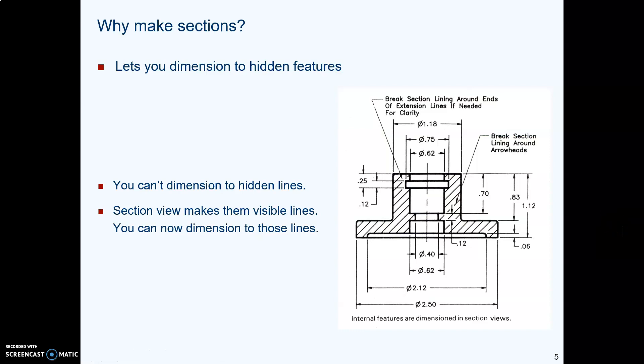Also, remember that ASME rule which says you may not dimension to a hidden line at all, period. And so if you have something that's shown with a hidden line and you need to dimension it, what you do is you make a section. Now that line becomes visible, now you can dimension to it. That may be the most common reason for making a section.